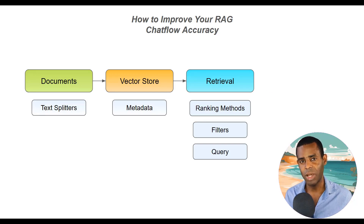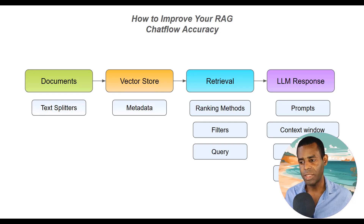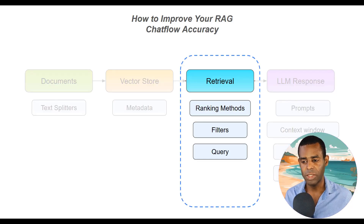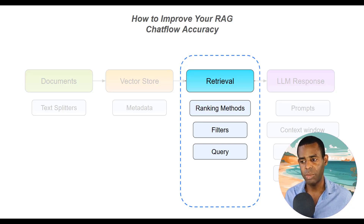The last phase is the LLM response. Here there are different things we can work on, such as using or improving prompts, expanding the context window, adding memory, and doing things like fine-tuning. For this video, we're going to focus specifically on retrieval — this is where we can use a lot of different, sometimes overlooked techniques to improve the documents returned from our vector store and provided to the LLM. We'll focus on ranking methods and filters.